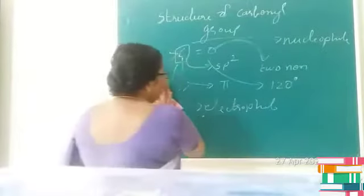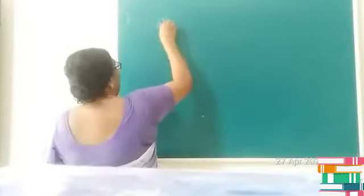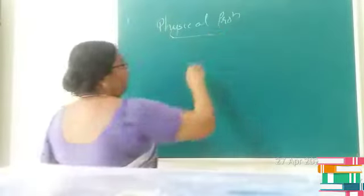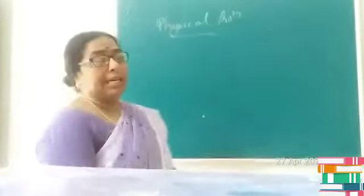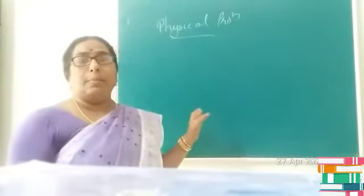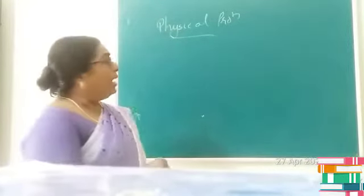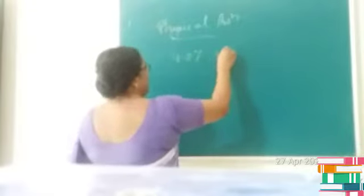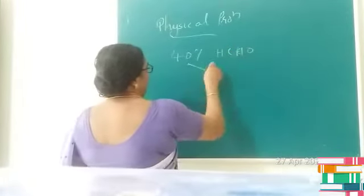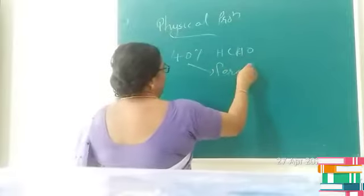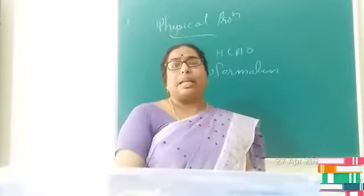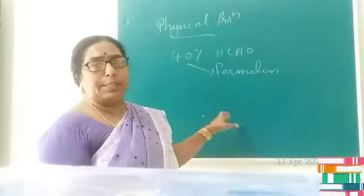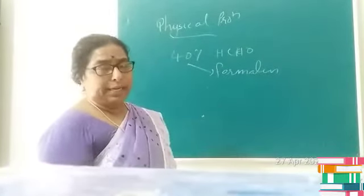Now let us study the physical properties of aldehydes and ketones. First, methanal — the first member in the aldehyde series — is a gas. Its common name is formaldehyde. A 40% aqueous solution of formaldehyde is called formalin, which is used as a biological preservative to preserve biological specimens.